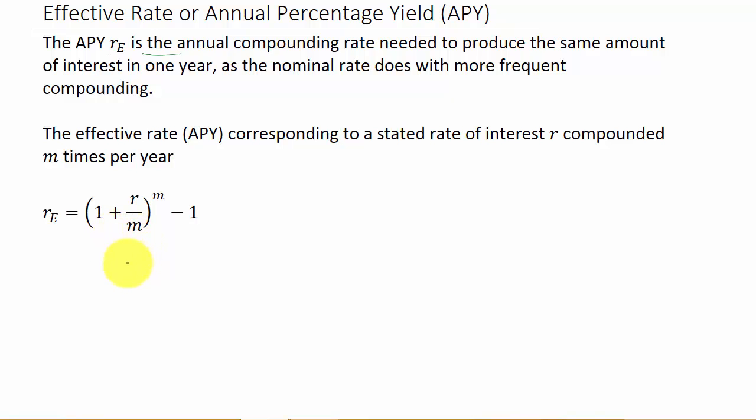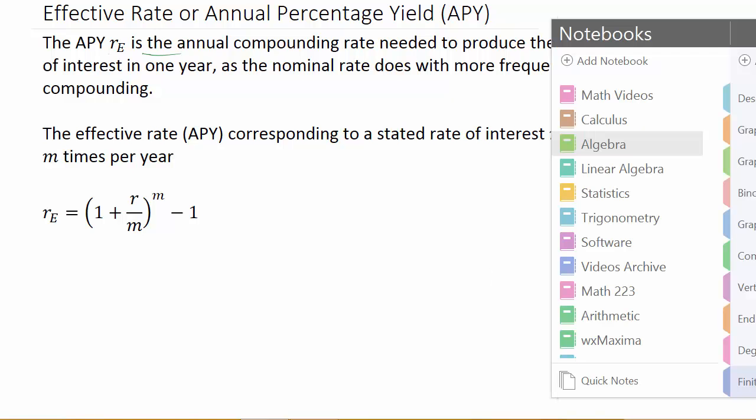Quarterly, M would be 4. Monthly, M would be 12. And daily, M would be 365. So I have a couple of examples to work. Let's go ahead and get started on those.